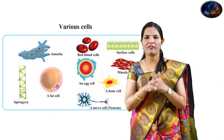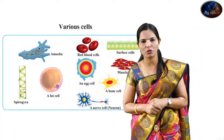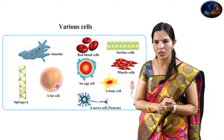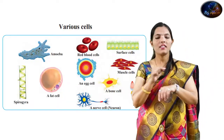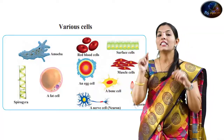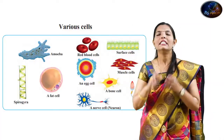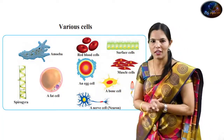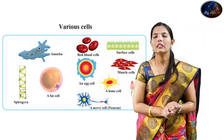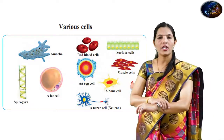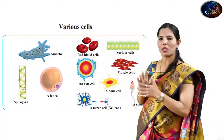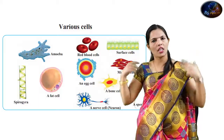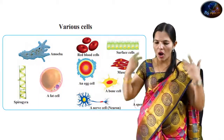Fat cells have a circular shape. Some cells have an oval shape. Surface cells are flat and small. Columnar cells are column-shaped. Muscle cells are elongated — it is very important to note the shape of muscle cells. Bone cells and nerve cells also have distinct shapes related to their function.